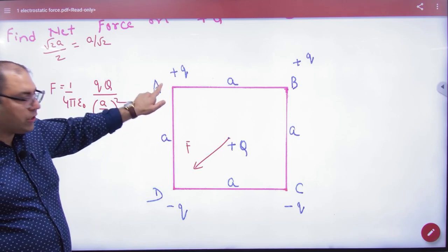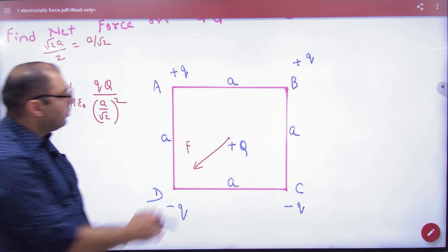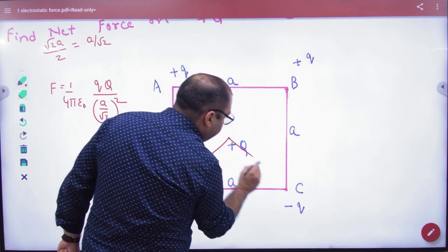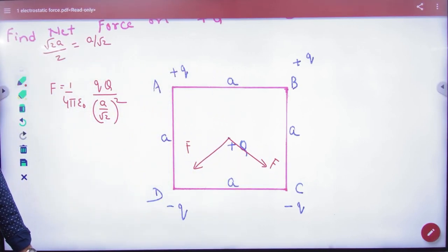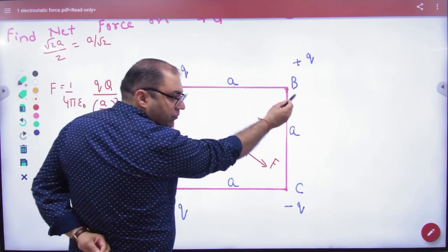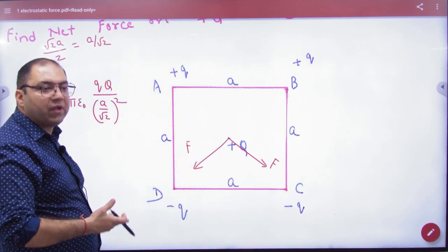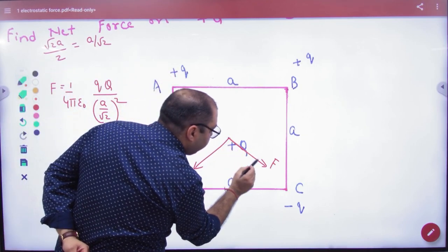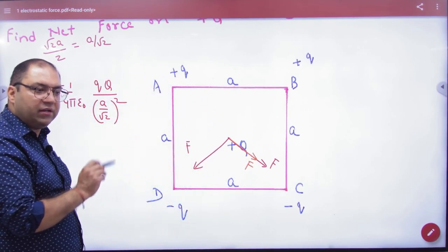Similarly, this positive q, kya karega? Repel. This negative q will attract, so this attraction. The third force will also be vector F. And this negative, this plus what will do? Attract and the fourth vector will be this.